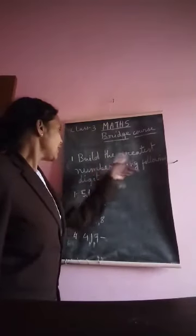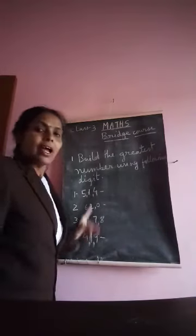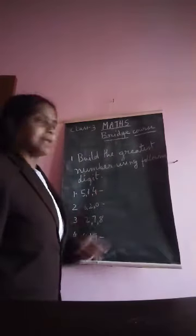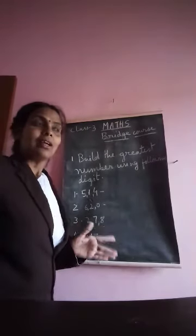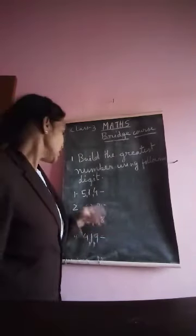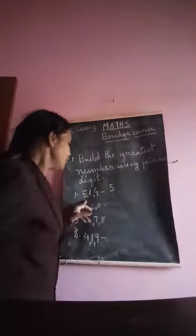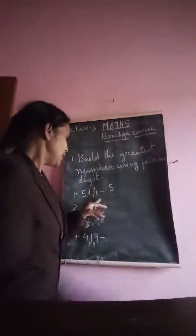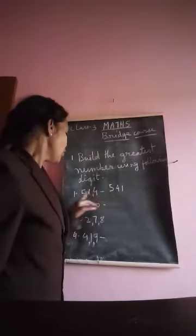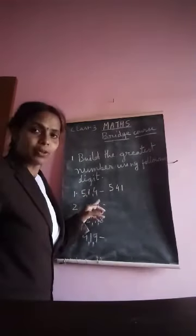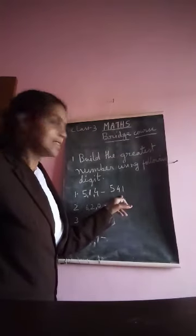See this: build the greatest number using the following digits. To make the greatest number, write the digits in descending order — biggest number first. From digits 5, 1, and 4, the biggest digit is 5, then 4, then 1. So 541 is the greatest number formed using digits 5, 1, and 4.